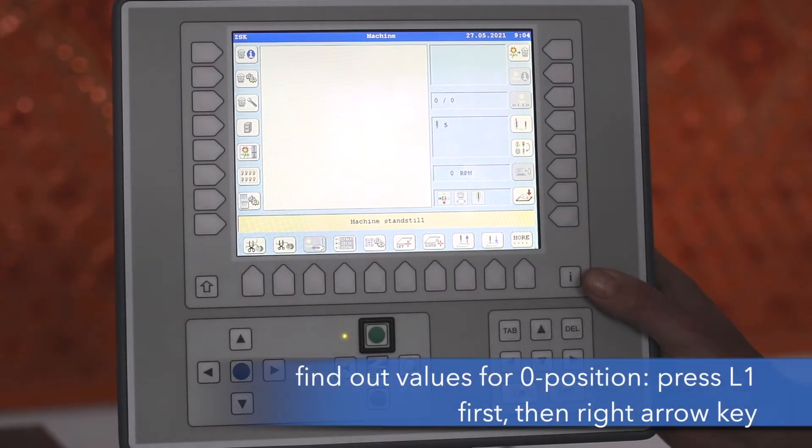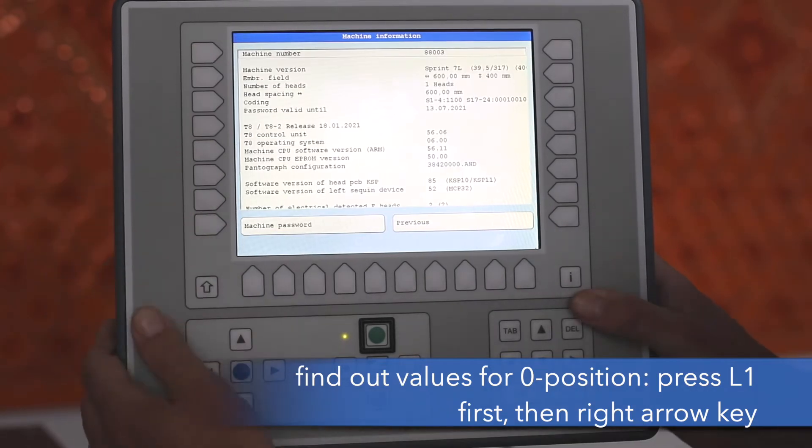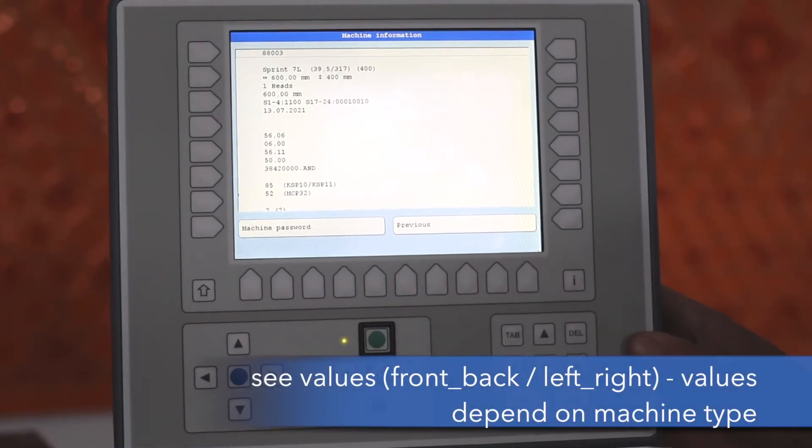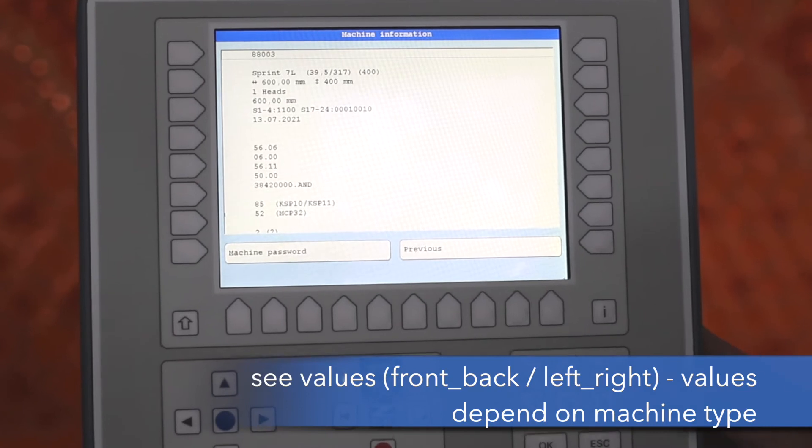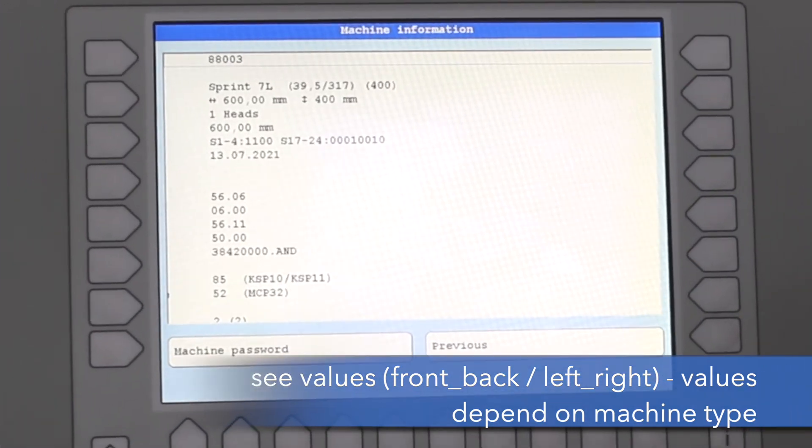First we have to find the values for the zero position. Then we have to go to L1, push to the right side and there we can see the values. 39.5 is for sprint 7L front and back, and 317 is left and right.